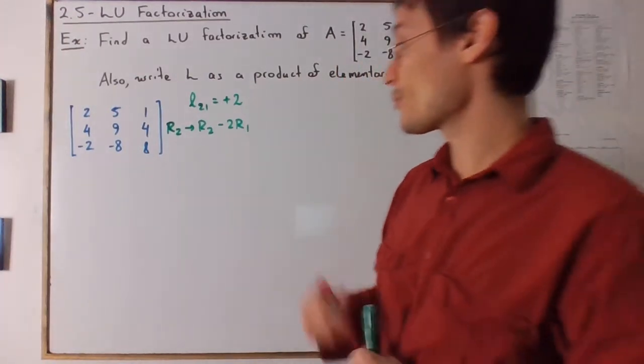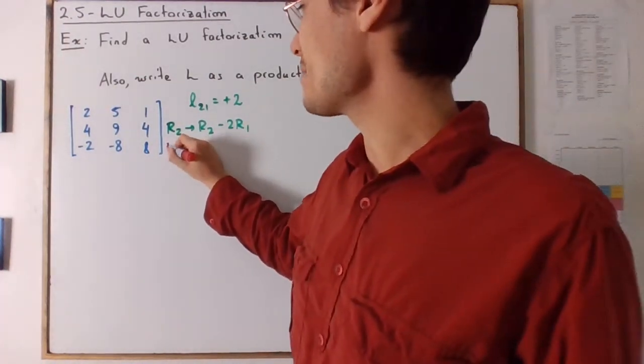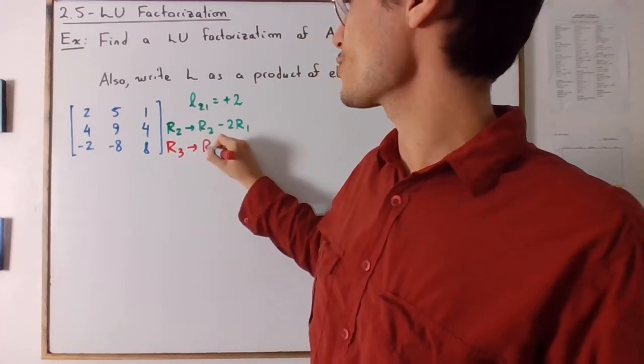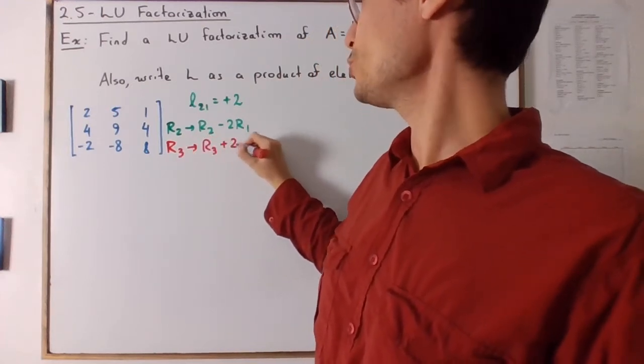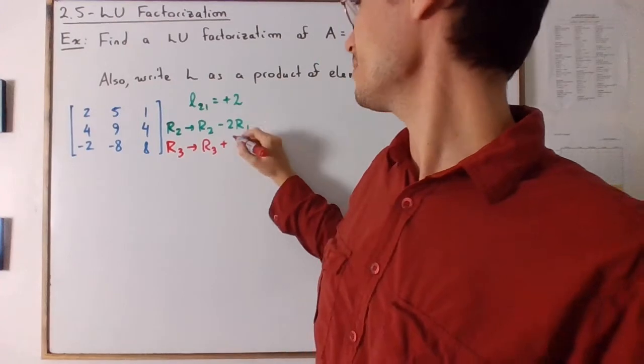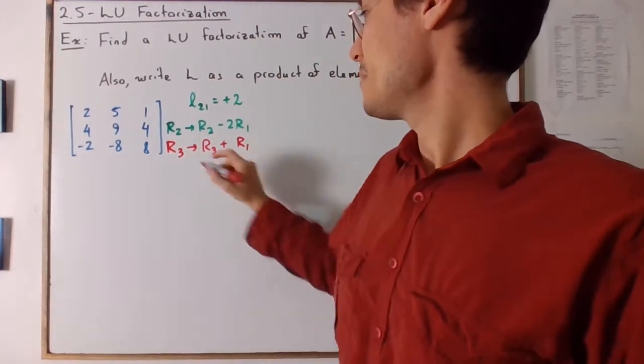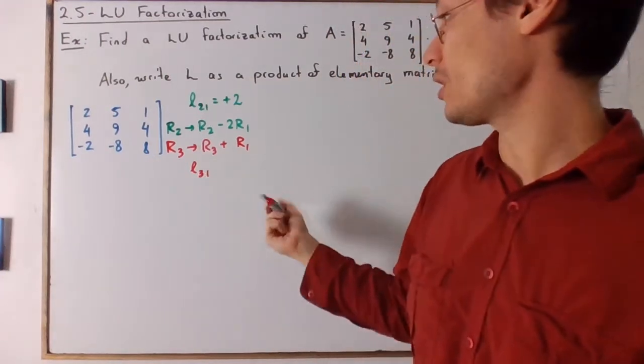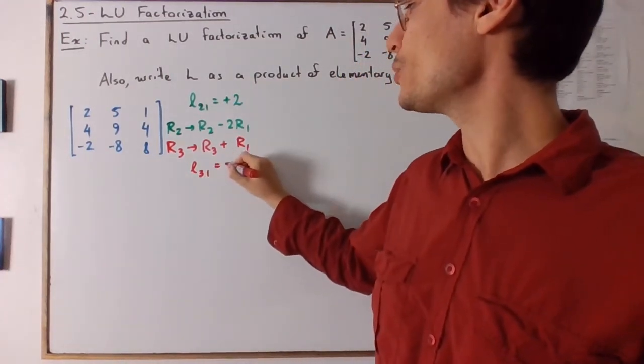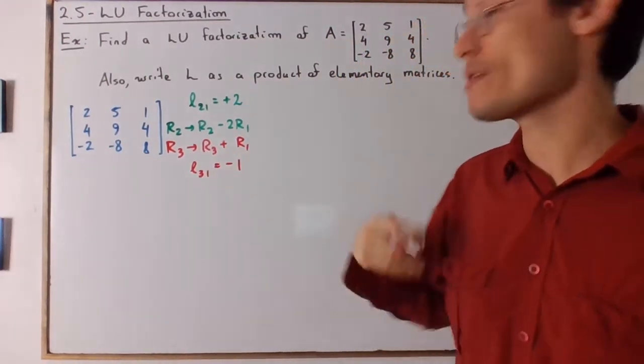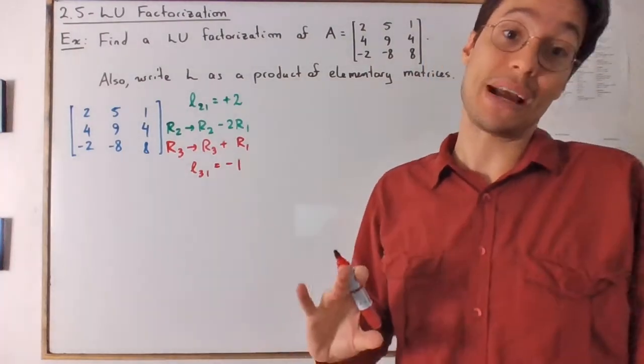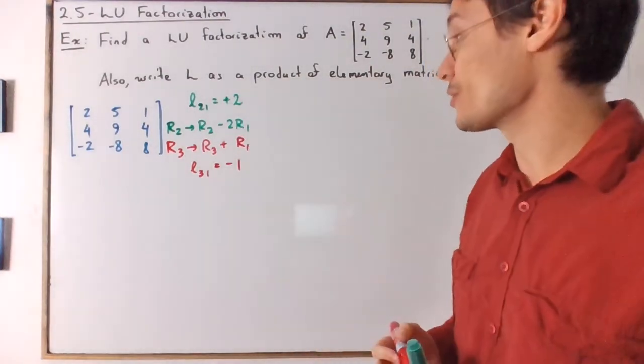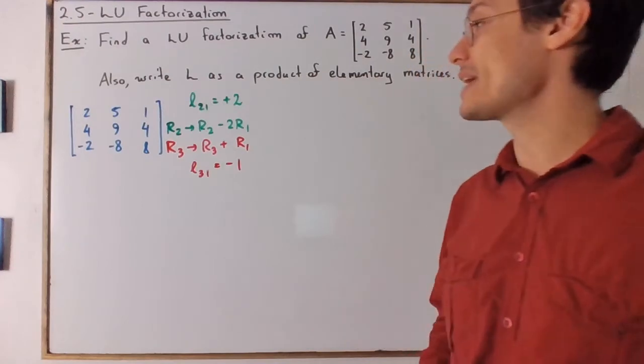Now, this row operation that we're doing at the same time. So row 3 becomes row 3 plus row 1. There we go. Means that L31, so third row, first column of L will be equal to negative 1, right? The reverse of adding a row is subtracting the row. So you will have a negative 1 in that matrix.